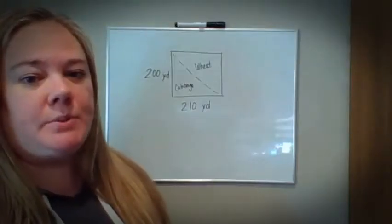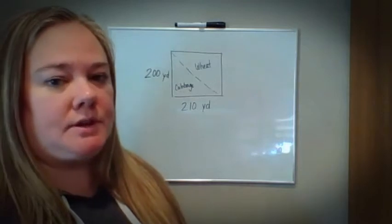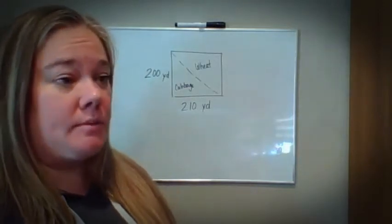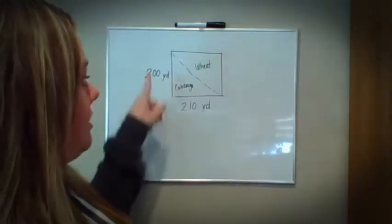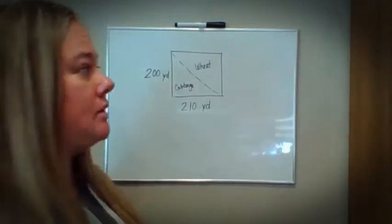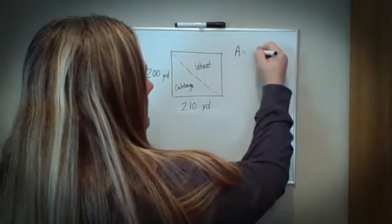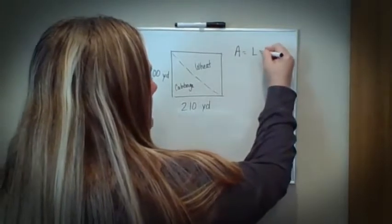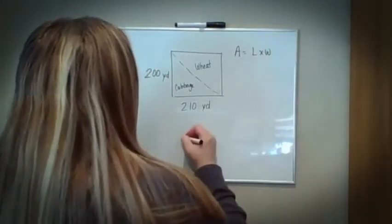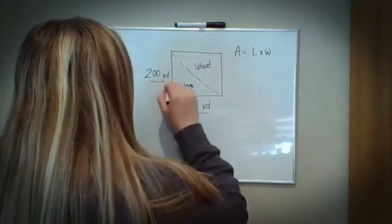When looking at this problem, you can look at it from a couple different ways. One is to look at it from the shape, which is the rectangle. The area of a rectangle or square is length times width. In this case, we have the length and we have the width.